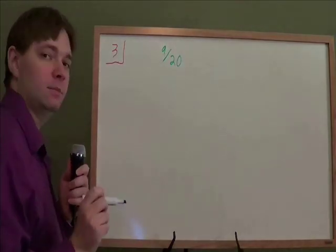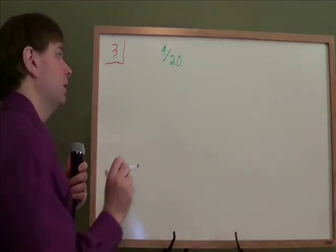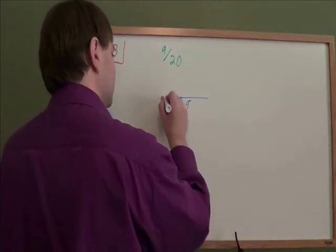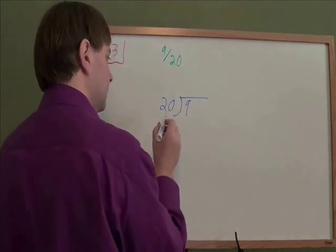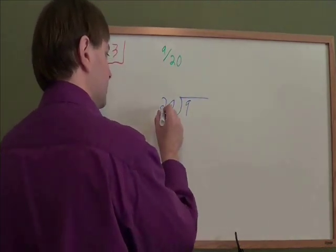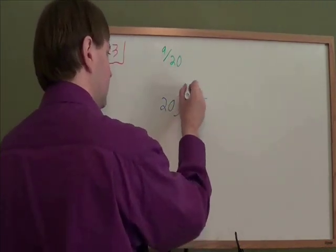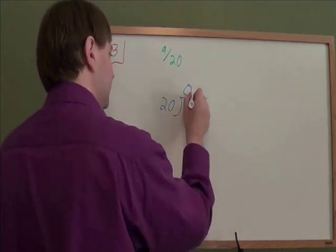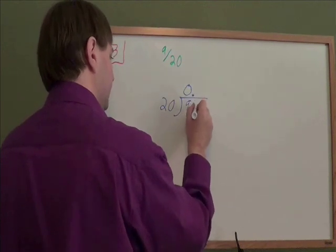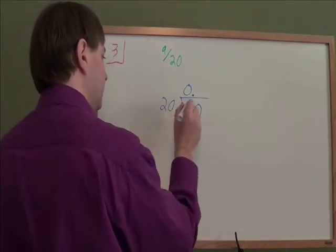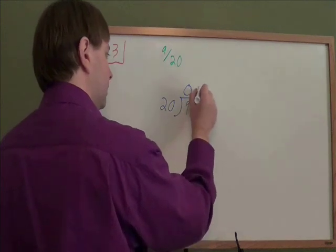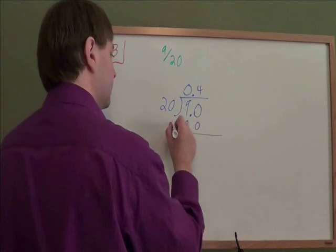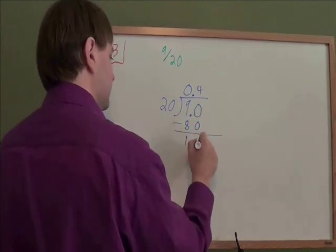To turn a fraction into a decimal, you need to perform the long division. Here we have 9 divided by 20. So how many times does 20 go into 9? None at all. And since we've run out of the usual places, we need to add a decimal, and those line up vertically, and add an extra zero. How many times does 20 go into 90? It goes in four times. 20 times 4 is 80. 90 minus 80 is 10.